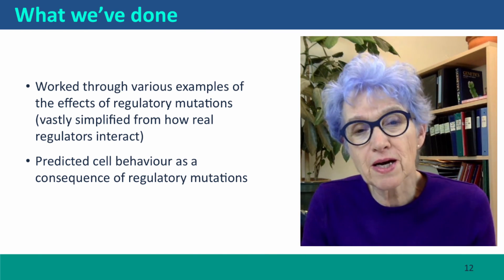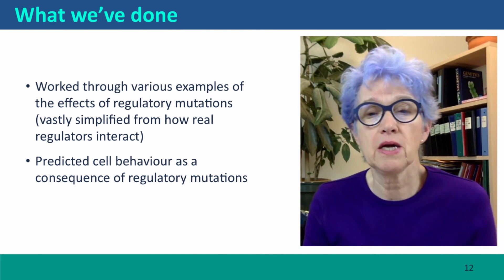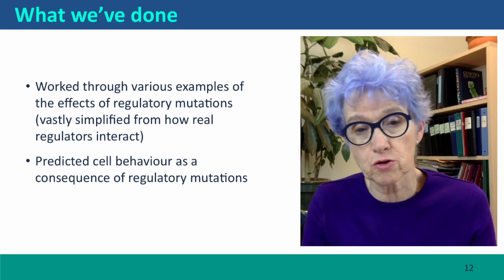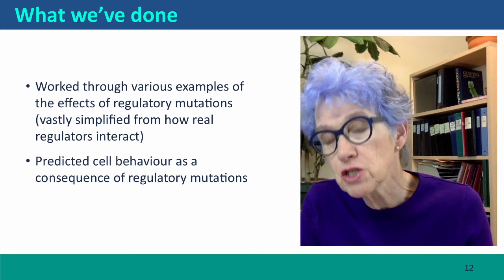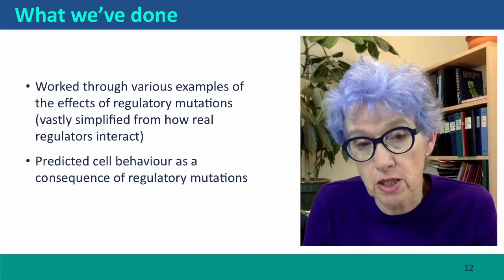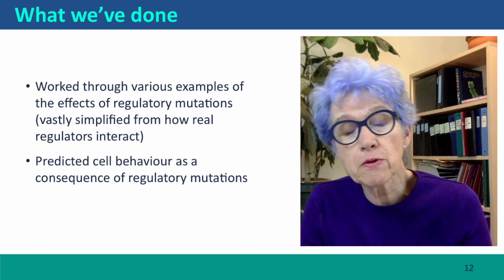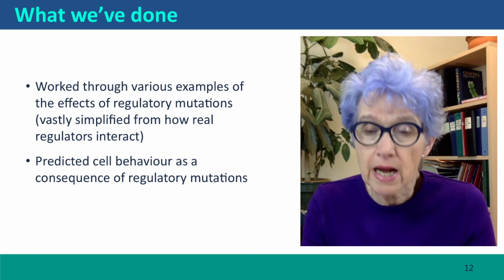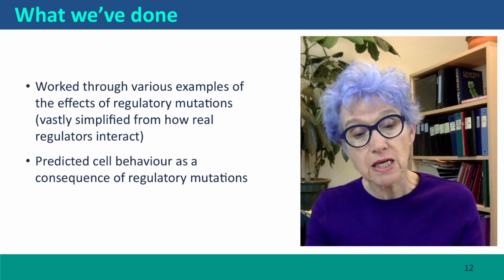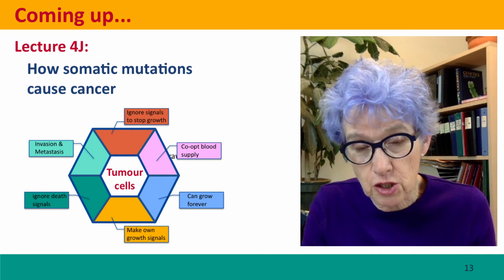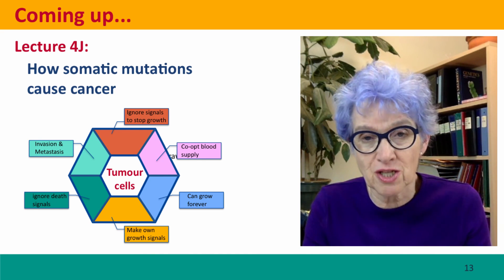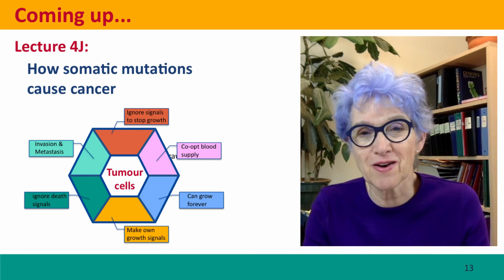So, we've worked through quite a few examples of the effects of regulatory mutations in a very simple model system where we only had two regulatory genes. And we were able to predict cell behavior as a consequence of these regulatory mutations. This has set the stage for what's coming up next, which is we're going to consider how somatic mutations cause cancer. I hope to see you there.